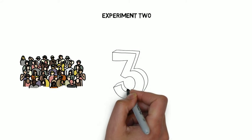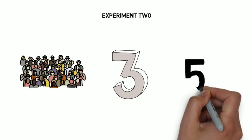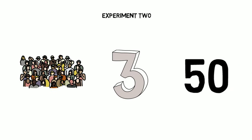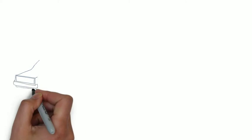This time they were divided up into three groups, not the five like in experiment one. Do the maths very quickly. 150 divided by three. It's 50. 50 participants in each group.